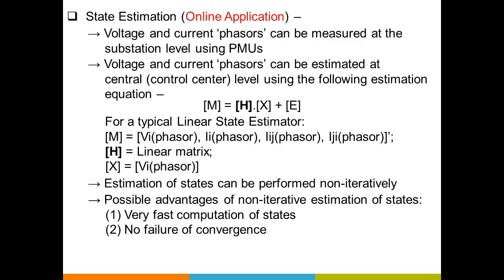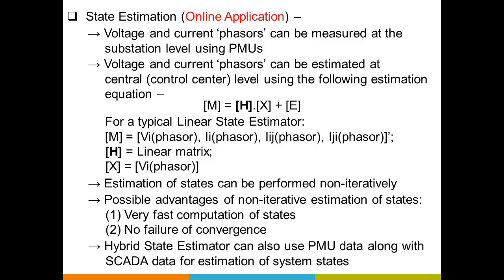Because PMUs may not cover the entire system, we might need PMUs covering part of the system while the remaining part is covered by SCADA. There is something called a hybrid state estimator that can use PMU data along with SCADA data to estimate the states of the system. This will operate at a slower rate than a pure linear state estimator, but given today's practicalities, a hybrid state estimator is one of the important tools one might want at the control center.